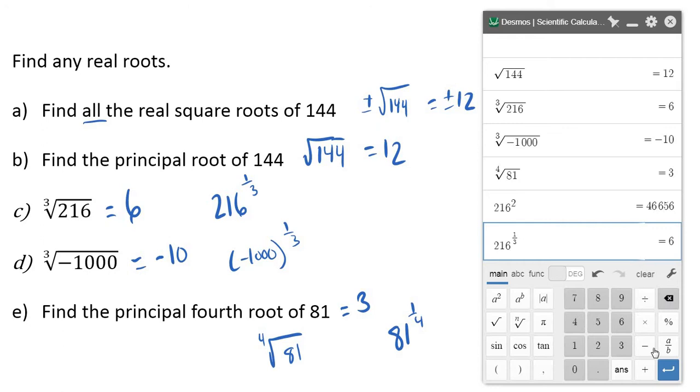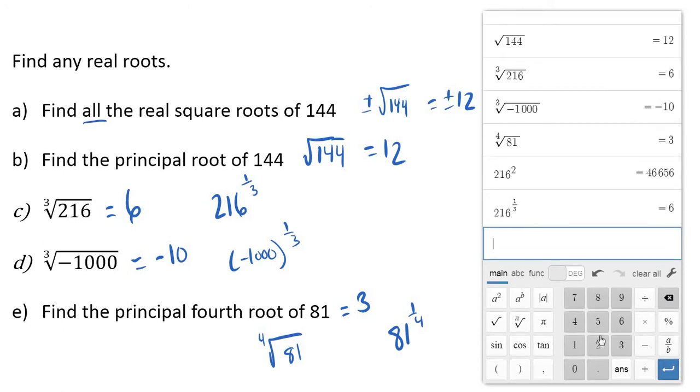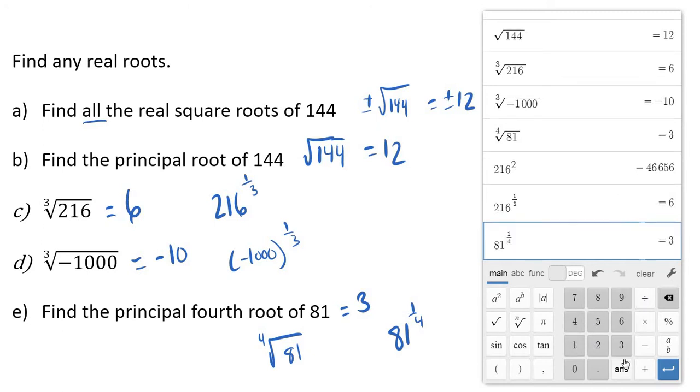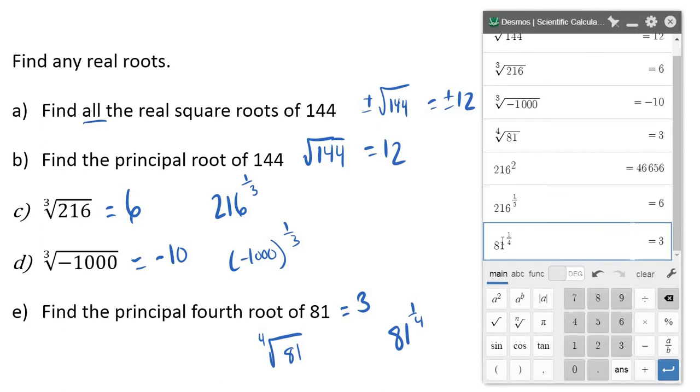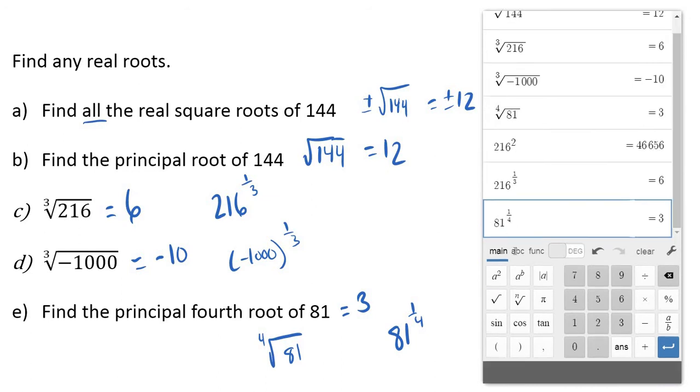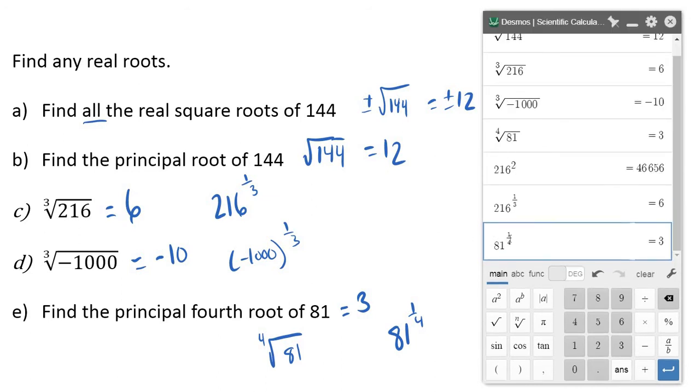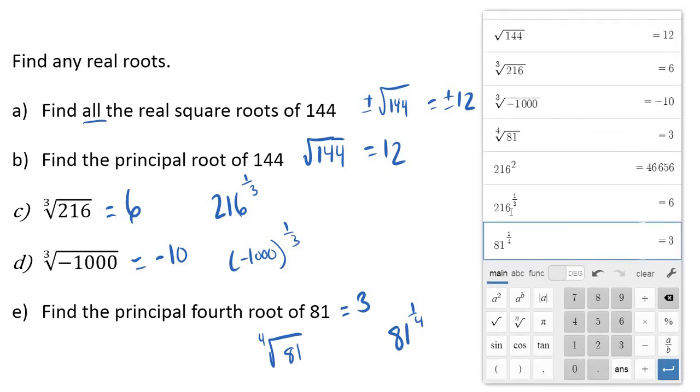Just clear that out. And how about 81 to the one-fourth power? On your calculator, if you've got a scientific calculator, you can use a little caret symbol as well. Type in those exponents. So there's different ways you can plug these in. We'll deal more with these fractional or rational exponents in the future. But same thing. Instead of putting the root like 216 cubed, one-third. So basically the root there is on the bottom of your fraction.